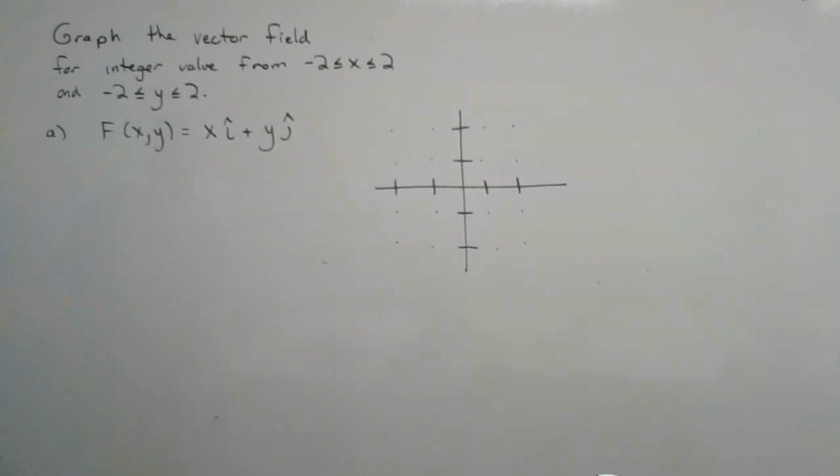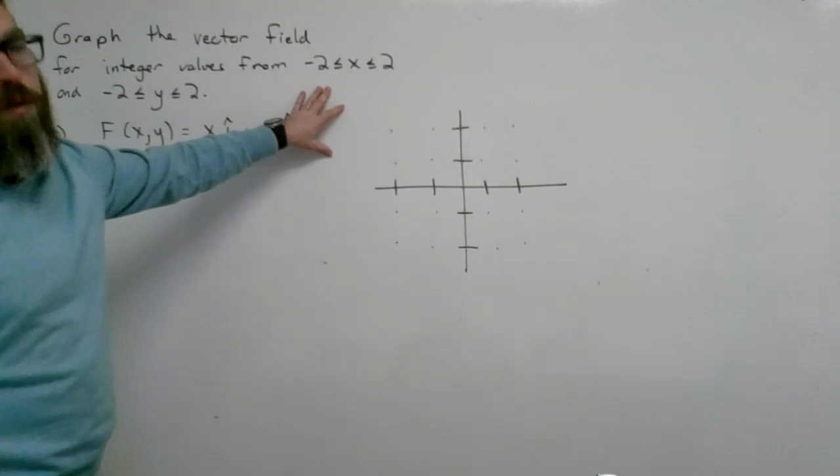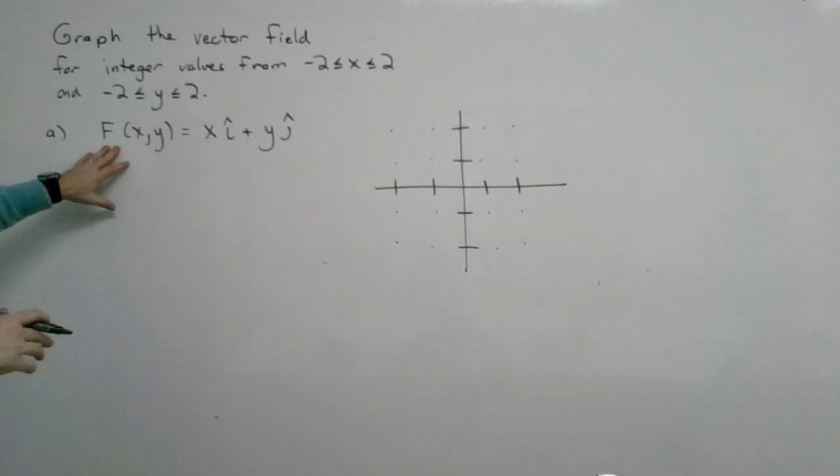Now, how to graph a vector field. I want to graph this vector field for integer values. You can make these things larger, but I did say this is a little tedious — some books might ask you to go from -10 to 10, but we'll do -2 to 2. I'm going to use the basic vector field F = xi + yj.